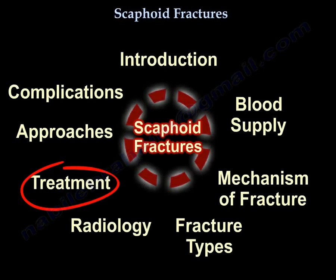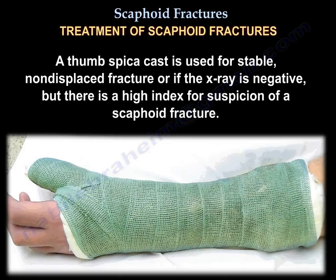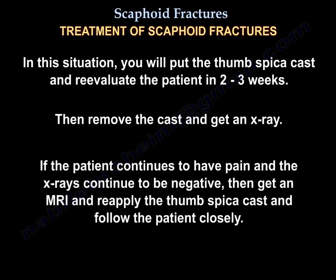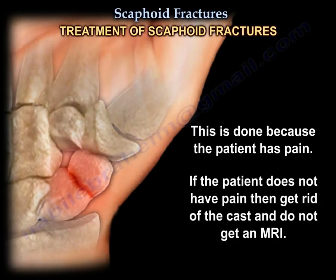Treatment of scaphoid fractures. Use a thumb spica cast for a stable non-displaced fracture, or if the x-ray is negative but there is a high index of suspicion. Apply the thumb spica cast and re-evaluate the patient in 2–3 weeks, then remove the cast and get an x-ray. If the patient continues to have pain and x-rays remain negative, get an MRI and reapply the thumb spica cast, following the patient closely. If the patient does not have pain, remove the cast — no MRI is needed.